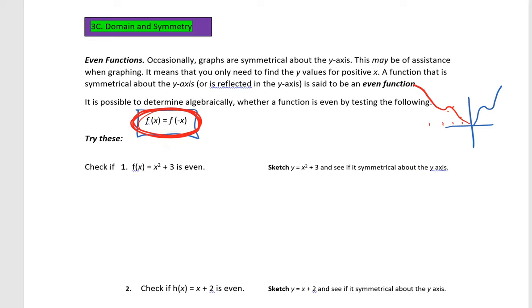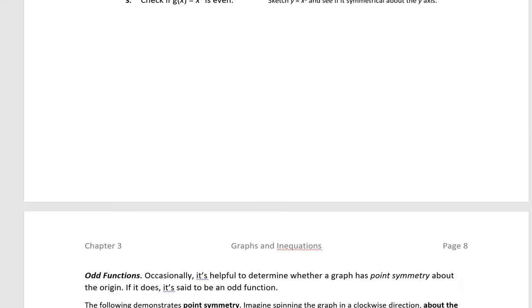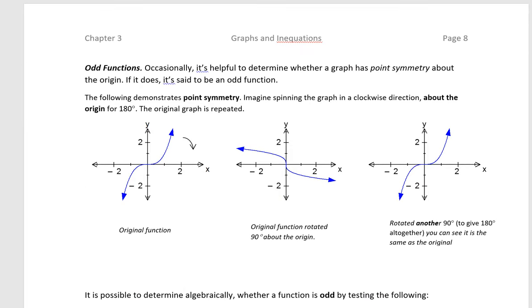The algebraic property for an odd function now, and here it's just demonstrating that an odd function has point symmetry. So if you imagine, and that's what I've got the arrow, you imagine taking this point and spinning it, and spinning it down. So once we've gone from here to here, we've only gone through 90 degrees.